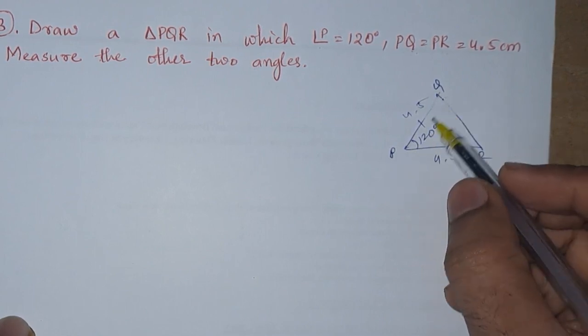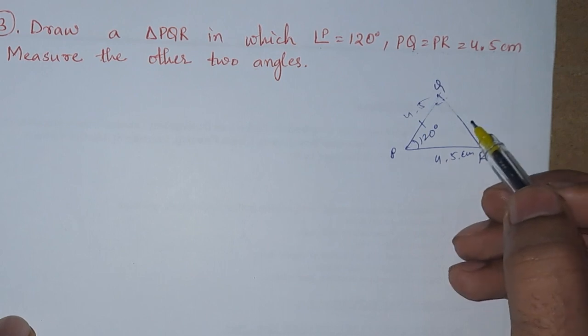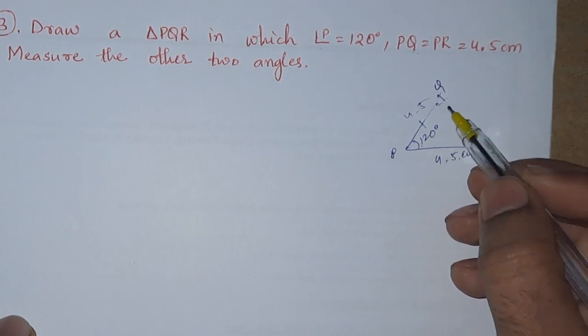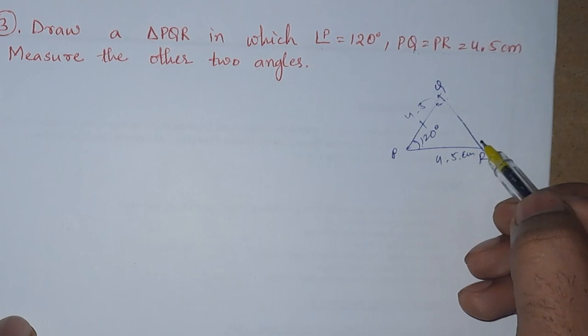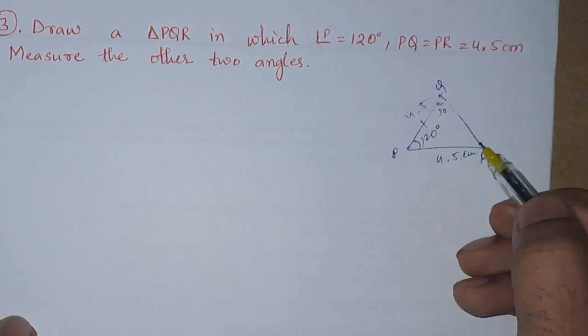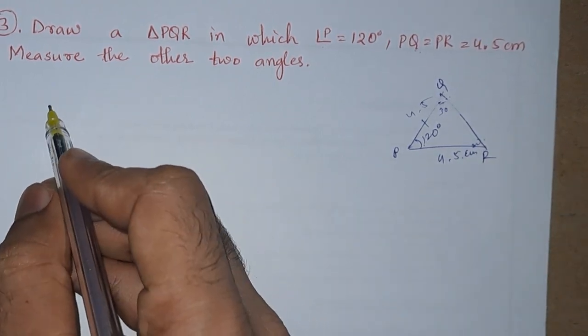So we know the sum of all angles property - sum of all angles equals 180 degrees. So the remaining is 60 degrees. 120 we have, so remaining is 60 degrees. So half of 60 is 30. We will get 30 and 30. So this is SAS type of construction.